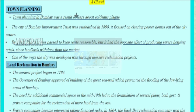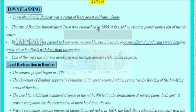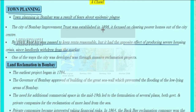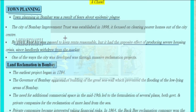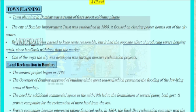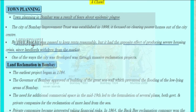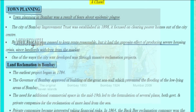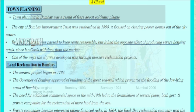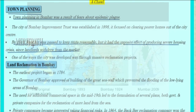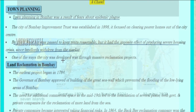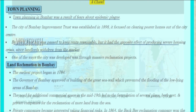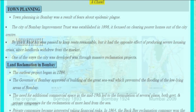Town planning in Bombay was a result of fears about the epidemic plague. The City of Bombay Improvement Trust was established in 1898, focused on clearing poorer homes out of the city centre. By 1918, the Rent Act was passed to keep rents reasonable, but it had the opposite effect of producing a severe housing crisis, since landlords withdrew from the market.